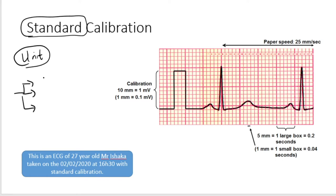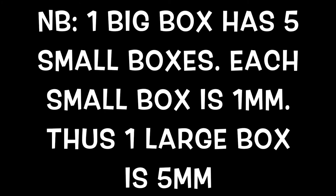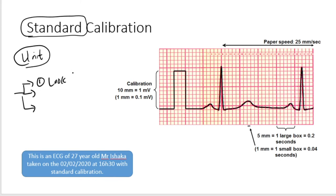There are actually a number of ways that you can figure it out if it's standard. Number one is by just looking at the number of boxes. Standard calibration dictates that, you see, this box that comes, then the ECG starts, this is where we look for calibration. The moment you have two big boxes, the height of two big boxes, that is standard calibration.